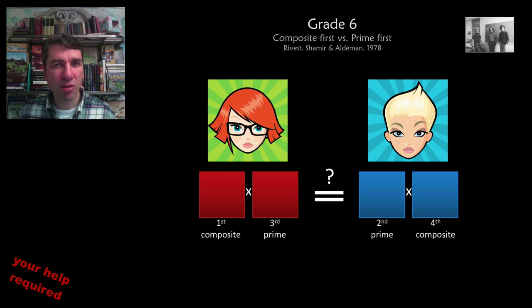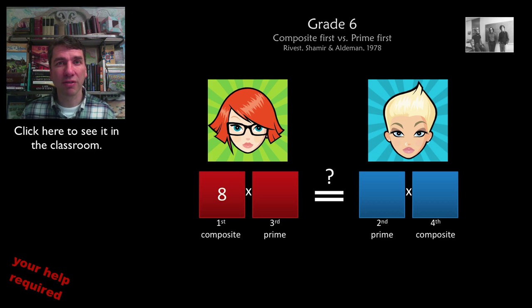This game is a great way to give your students practice in prime and composite numbers. You split the class into two groups, red and blue. The red team always goes first, and they get to choose a composite number. So here they've chosen eight.